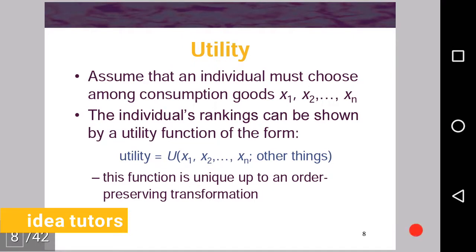Assume that an individual must choose among consumption goods x1, x2, xn. The individual's ranking can be shown by a utility function of the form utility equals U(x1, x2, xn, other things). Basically x1, x2, xn are these goods available for consumption and other things are all the other things that are affecting the utility of the person. This function is unique up to an order-preserving transformation.